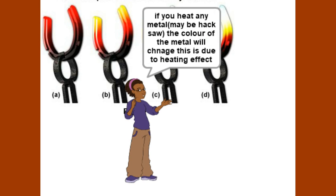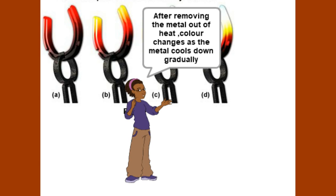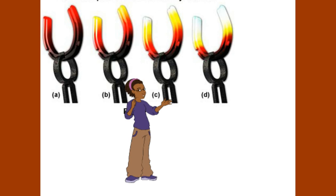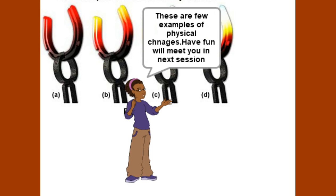If you heat any metal, maybe a hacksaw, the color of the metal will change due to heat. After removing the metal from the heat, the color changes as the metal cools down gradually. These are a few examples of physical changes.